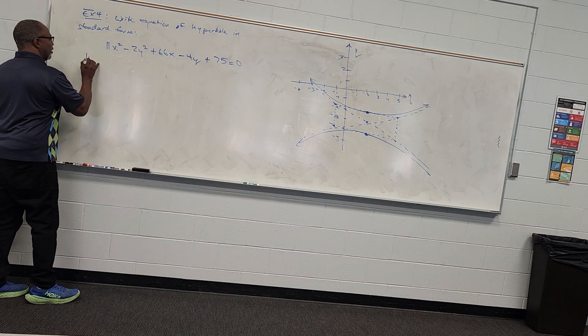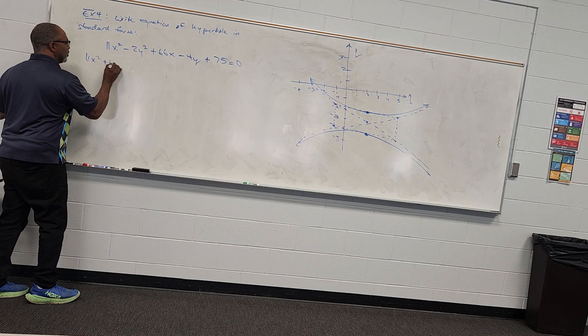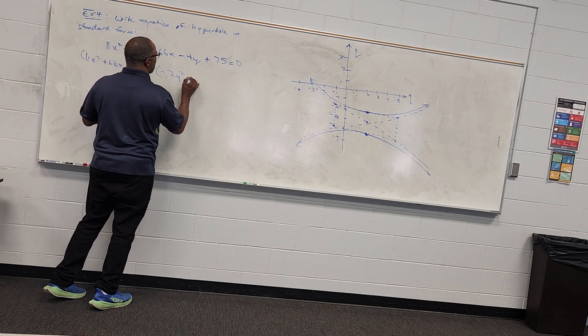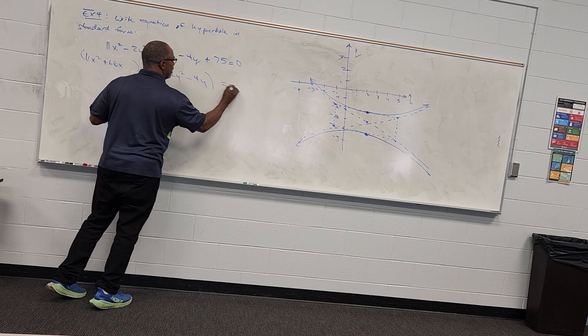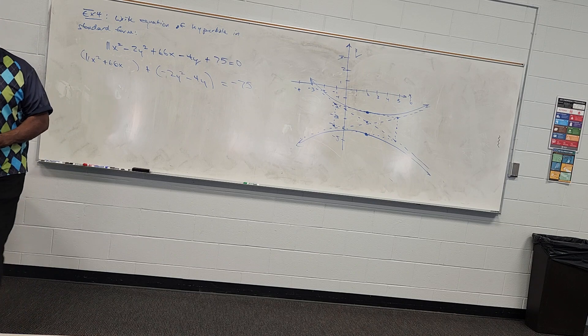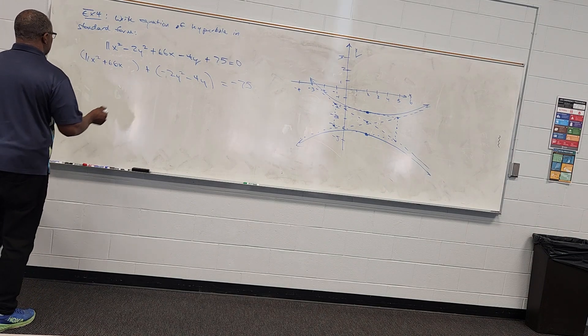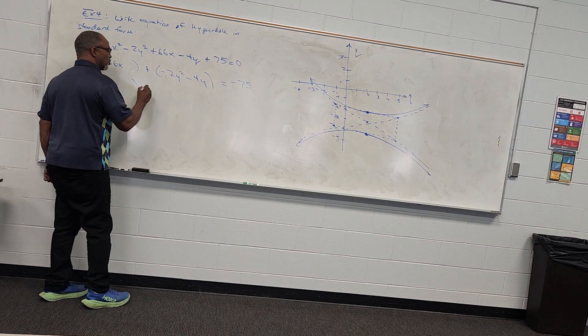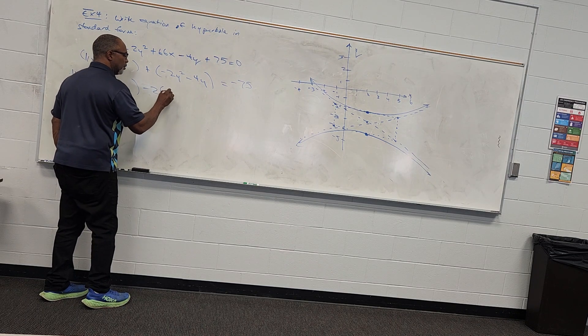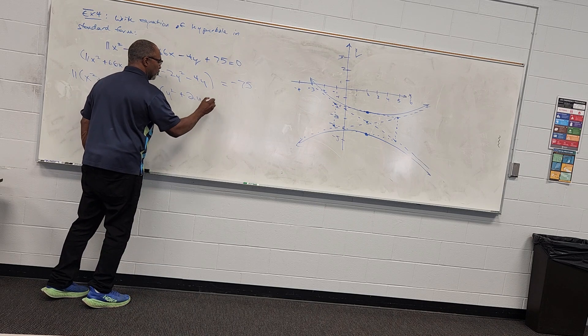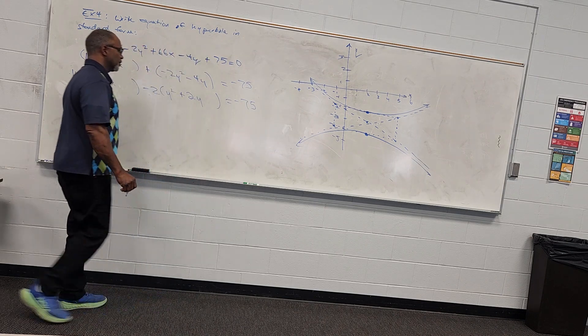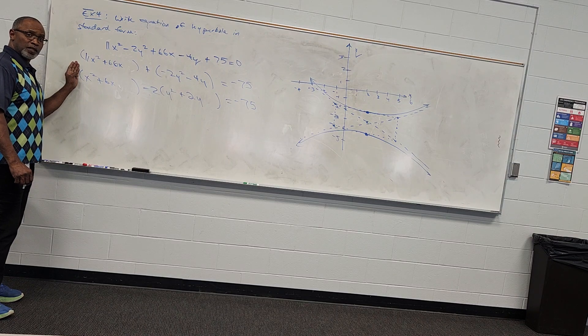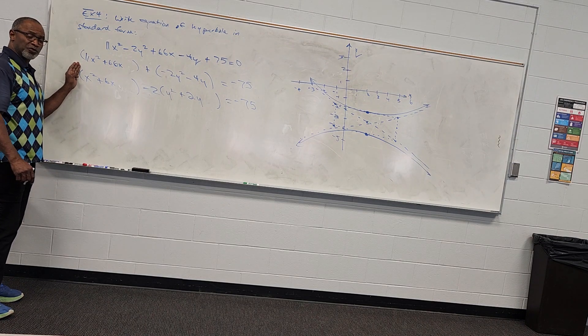Well, I've got to put it in standard form, so I've got to complete the square. So I'm going to take the 11x squared plus 66x, I'm going to group those two. Then I'm going to take the negative 2y squared minus 4y, I'm going to group those two. And the 75, I'm going to subtract 75 on both sides. Now I'm going to complete the square. First I've got to factor out the 11. So x squared plus 6x, I'm going to leave some room because I'm going to complete the square. And I'm going to pull out a negative 2 here, and I'll have y squared plus 2y. Leave some room. Negative 75.